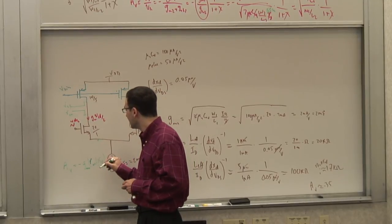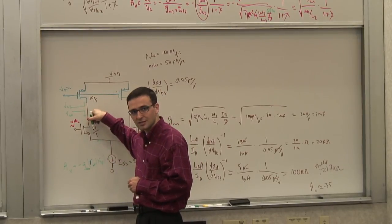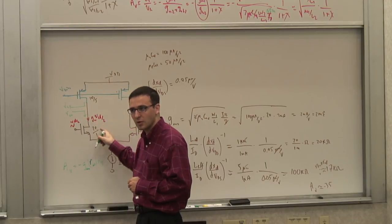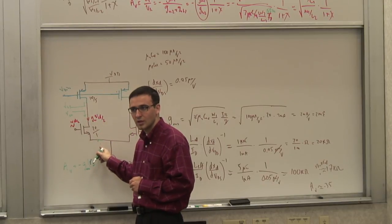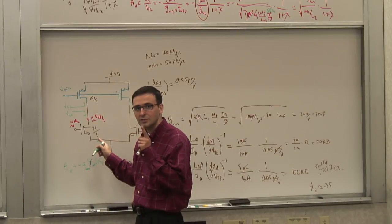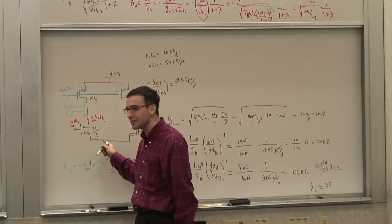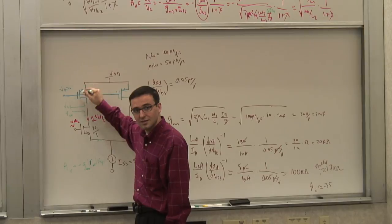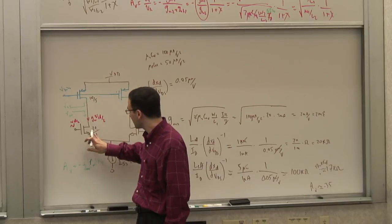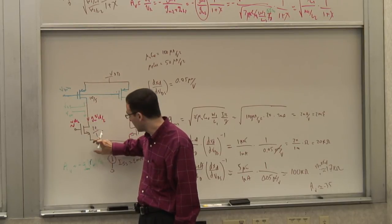Another idea: put a resistor in the source of the drive transistor — source degeneration. That does increase effective output resistance, multiplied by (1 + GM * Rs). But it also reduces effective transconductance: the gain is the load resistance divided by (1/GM + Rs). So adding source degeneration increases output resistance but reduces transconductance — these effects partially cancel and may not give a net gain improvement.